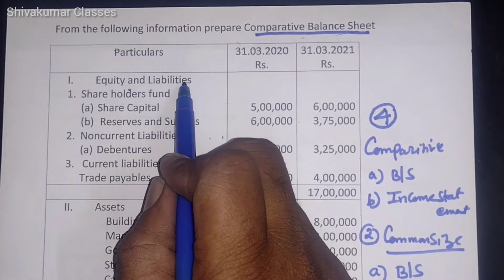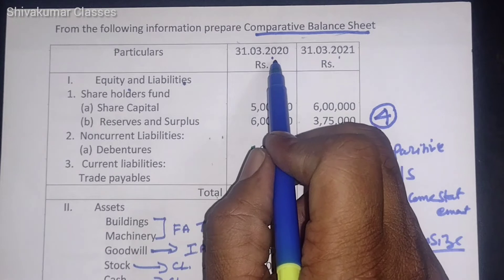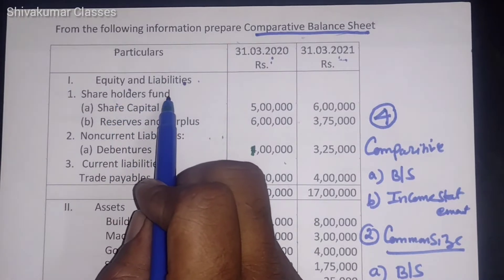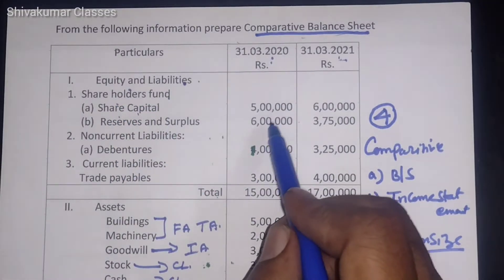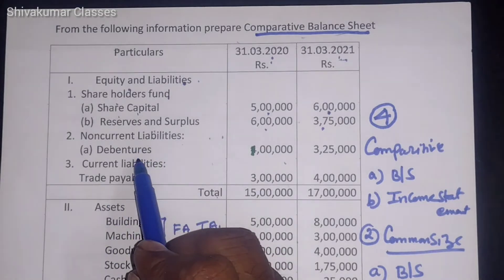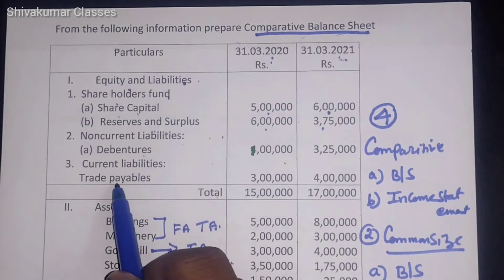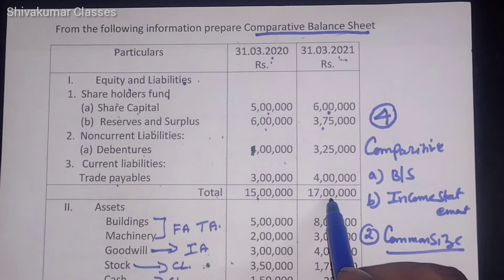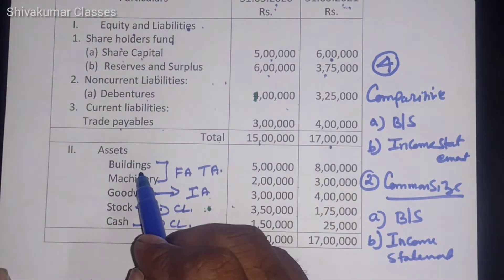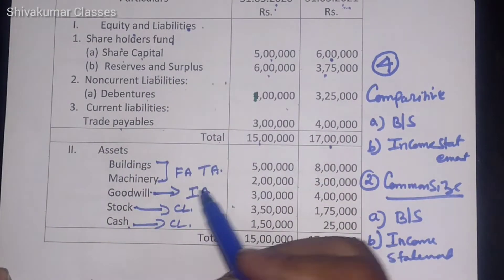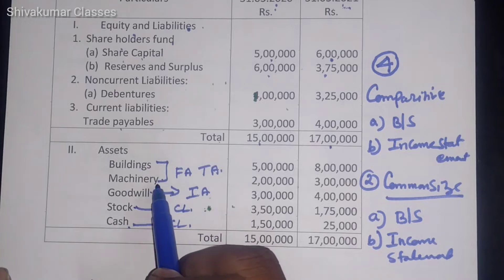Equity and Liabilities — information is given for 2 different years, 2020 and 2021. The very first one is Shareholders Fund. Under that, Share Capital: first year 5000 and second year 6000. Then Reserves and Surplus, Non-Current Liabilities, Debentures, Current Liabilities, Trade Payables — various amounts are given. The total of the Balance Sheet is 15 lakh and 17 lakh. Coming to the Assets: Building, Machinery, Goodwill, Stock, and Cash — various assets are given in mixed form.